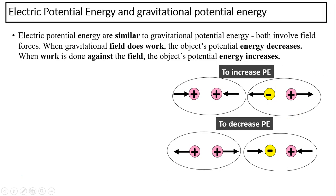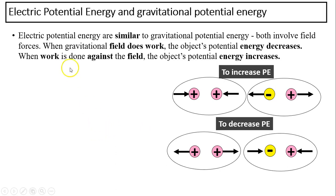Electric potential energy and gravitational potential energy. Electric field and gravitational field are very similar, as is their energy. Electric potential energy is similar to gravitational potential energy — both involve field forces. When the gravitational field does work, objects' potential energy decreases. And when work is done against the field, the potential energy increases.